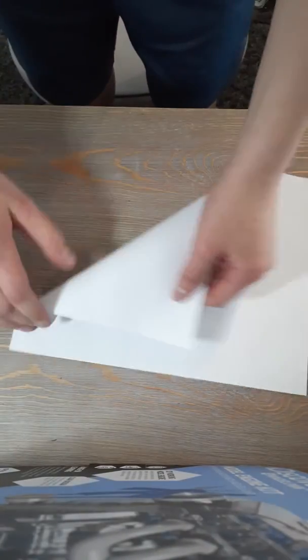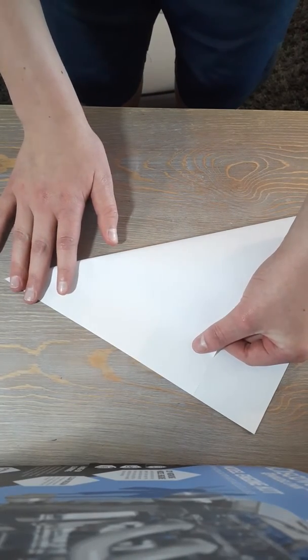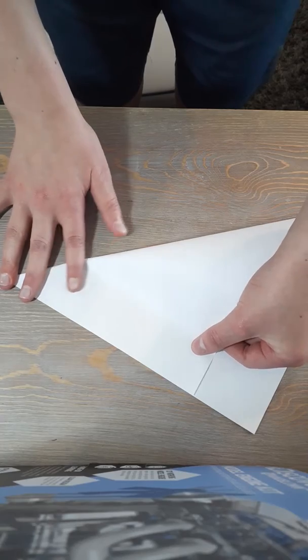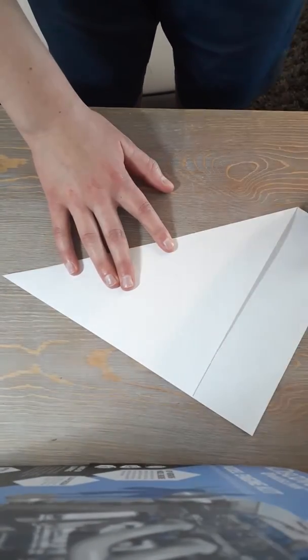First off, we're going to start with the square. The square is basically what you make the entire thing out of. Pretty simple, you just fold it. You should have about this much paper left over.